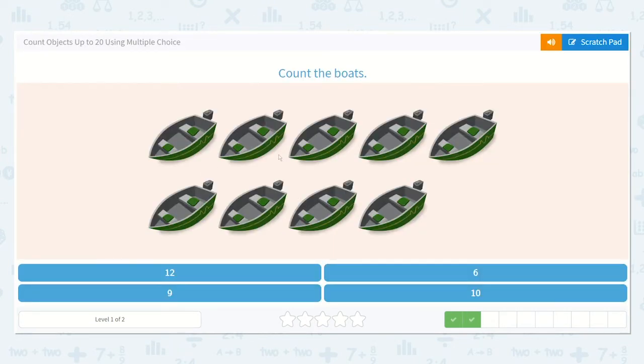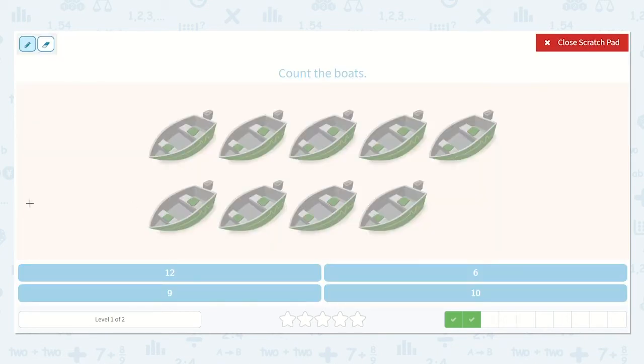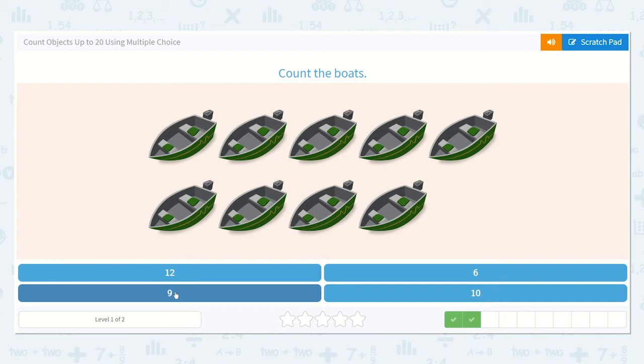I would like to draw some lines under these or make marks on these boats because there are quite a few and I don't want to lose track. So this time I'll draw lines under them. One, two, three, four, five, six, seven, eight, nine. There are nine boats. Do you see a nine below? Yes, right here.